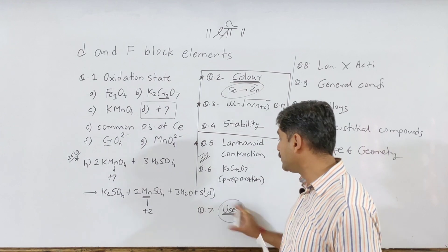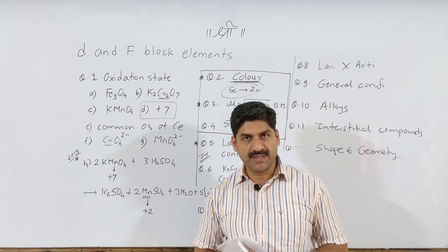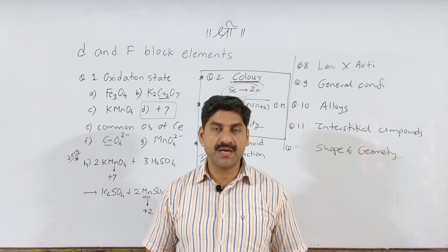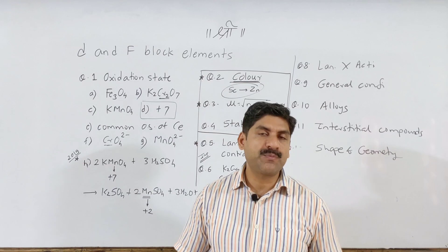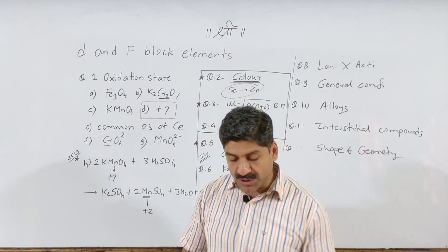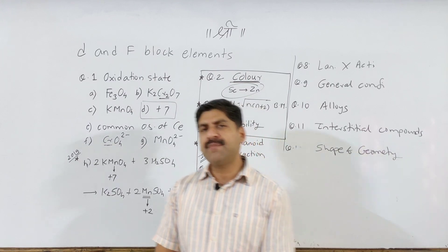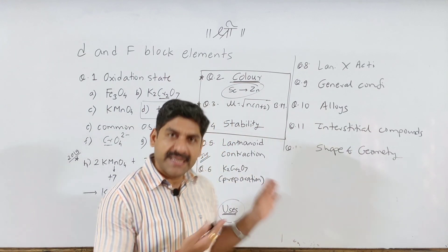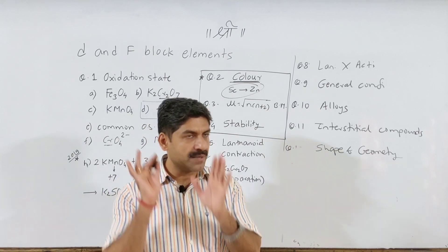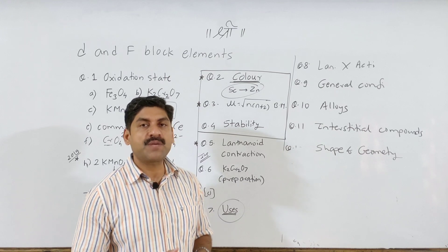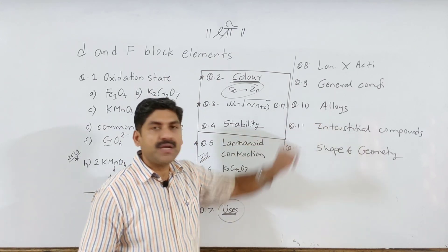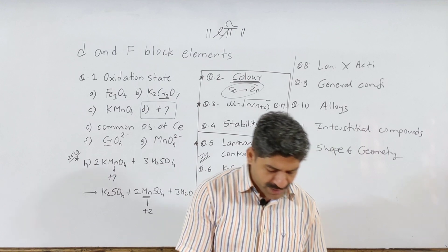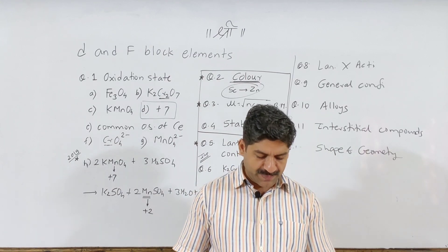F-block and d-block are both covered. D-block metals are very important for their catalytic properties — catalyst uses are important. Vanadium pentoxide (V2O5) is used in the contact process. P-block is also done. Important uses include German silver alloy.